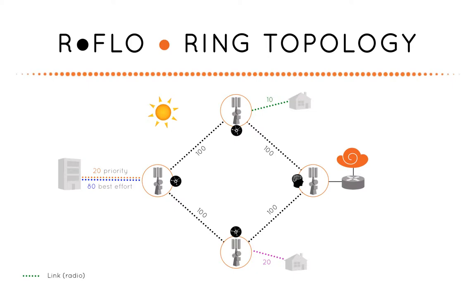There is also an 80 megabit per second best effort internet service. The logical paths shown are how the WISP actually sets up the service using the mind control web app.